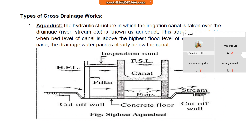Next, types of cross drainage works. Number one is aqueduct. The hydraulic structure in which the irrigation canal is taken over the drainage — that is river and stream etc. — is known as aqueduct. This structure is suitable when the bed level of the canal is above the highest flood level of drainage. In this case, the drainage water passes clearly below the canal.